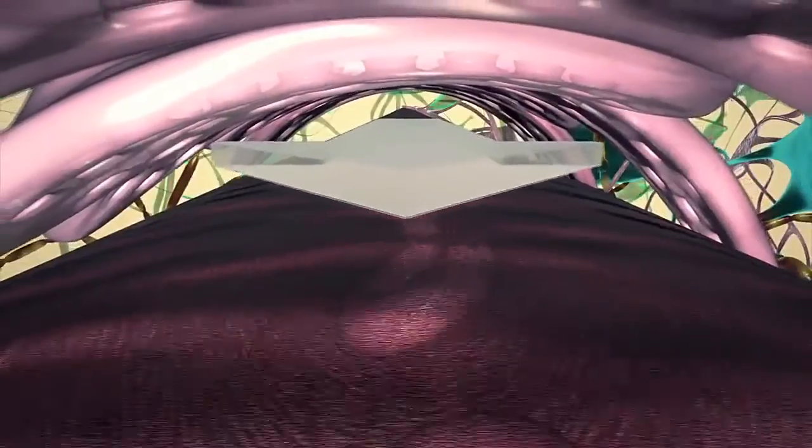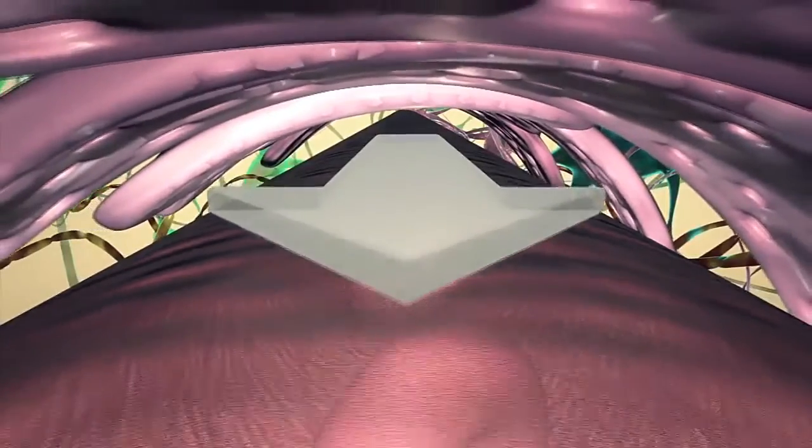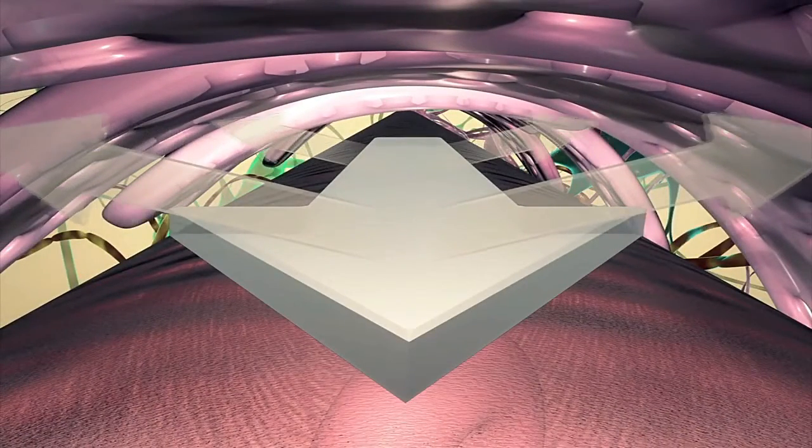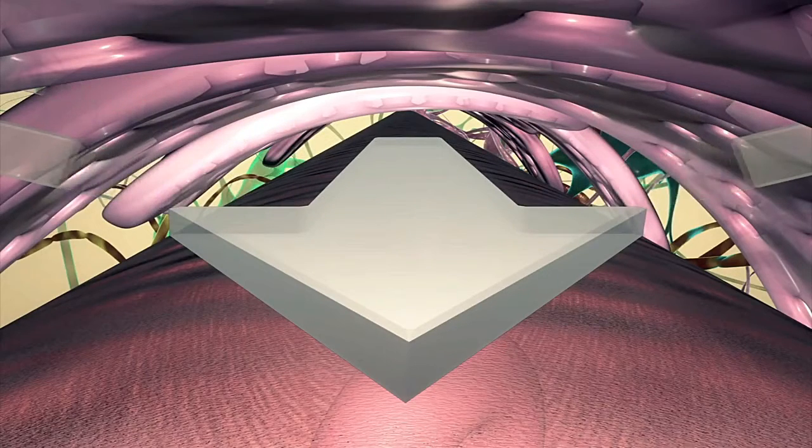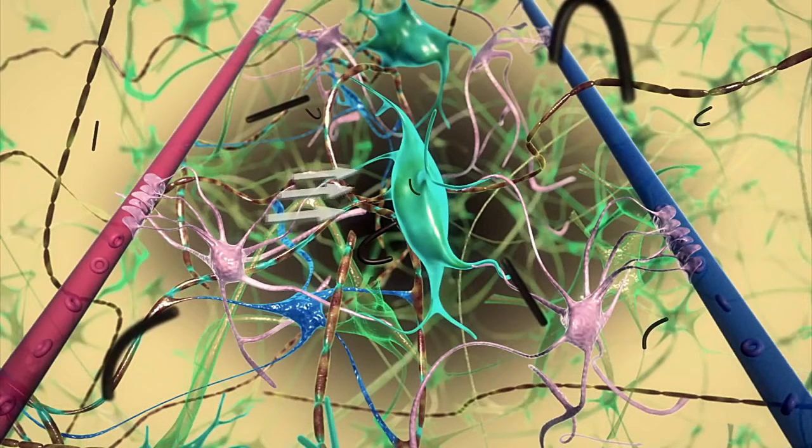The astrocyte, a type of glial cell, has tiny pores that suck cerebrospinal fluid from blood vessels into the interstitial space.